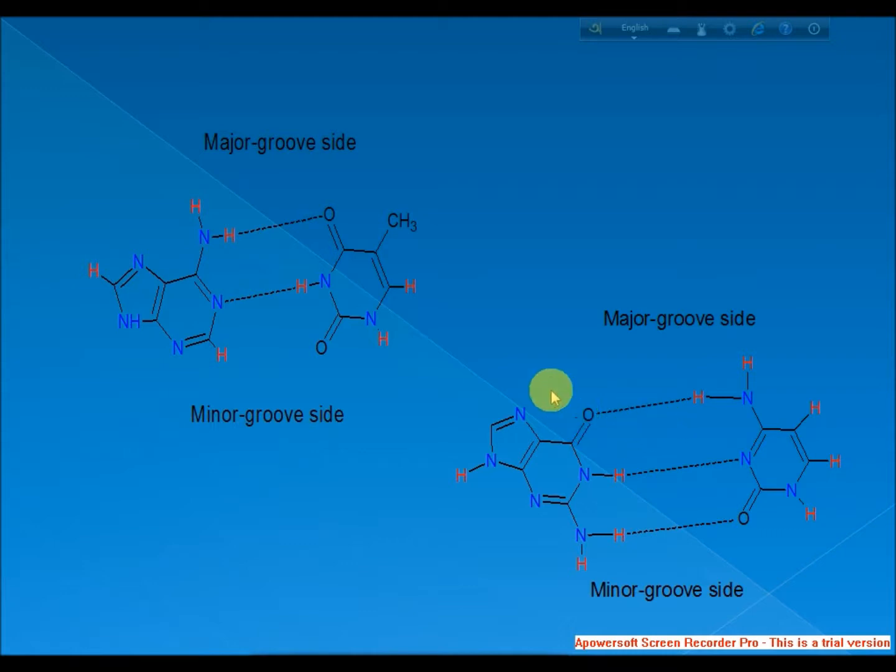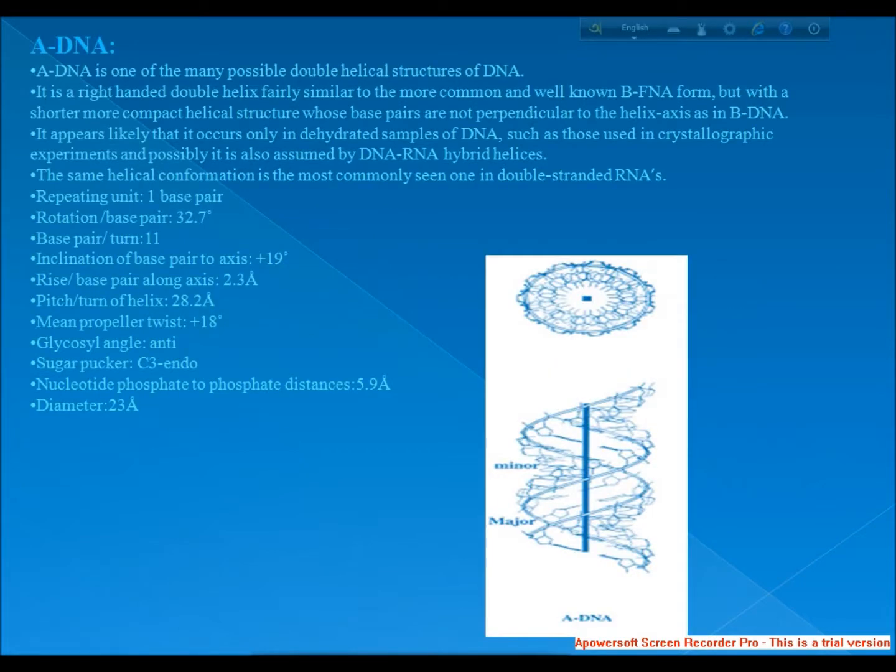Five major forms of DNA are double-stranded and connected by interactions between complementary base pairs. These are termed A-form, B-form, C-form, D-form, L-form, and Z-form.